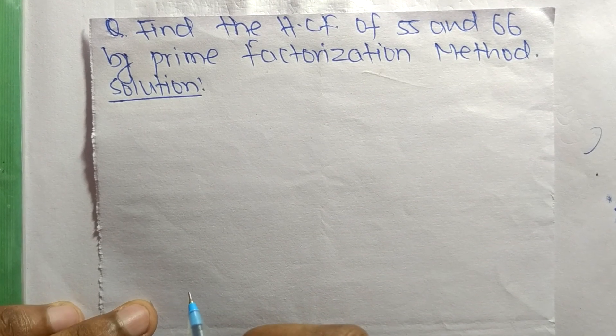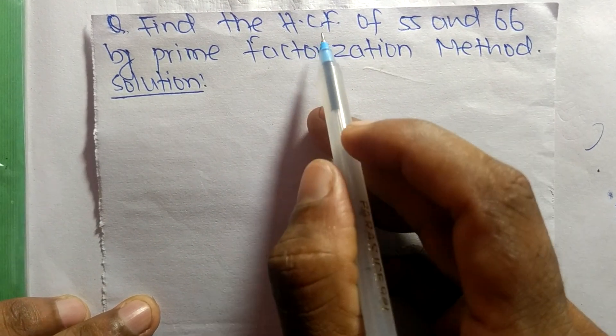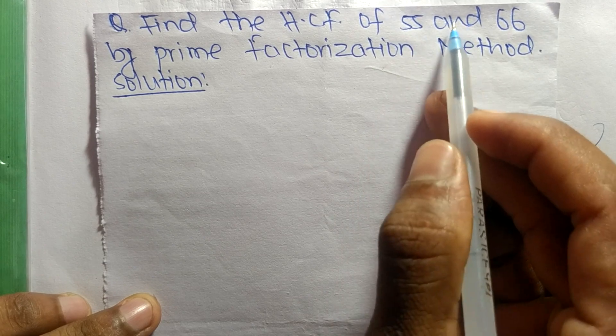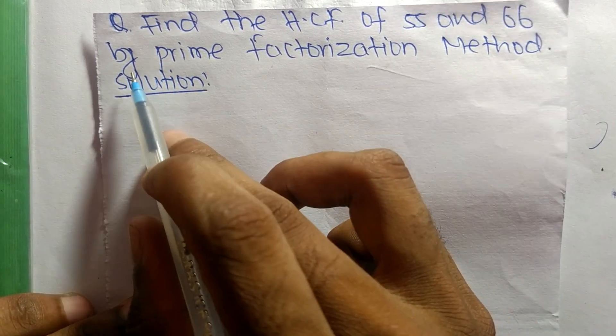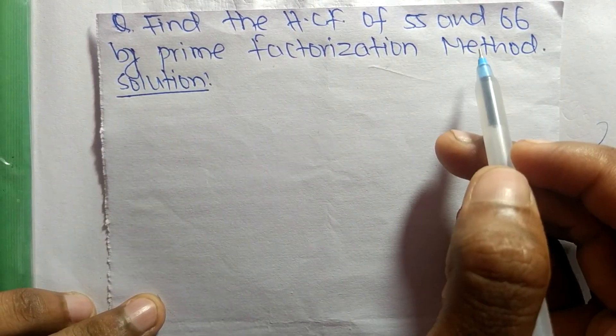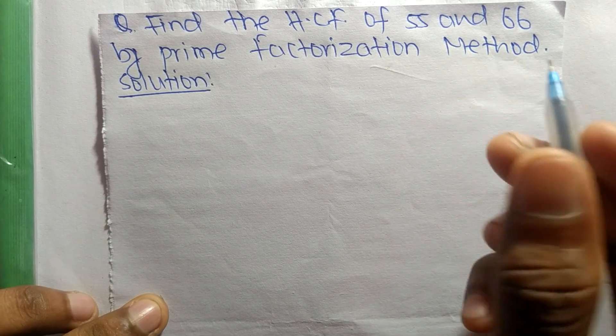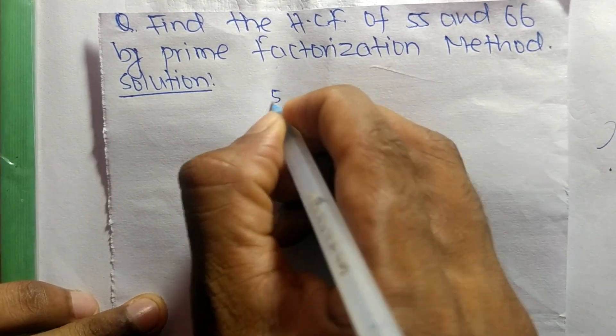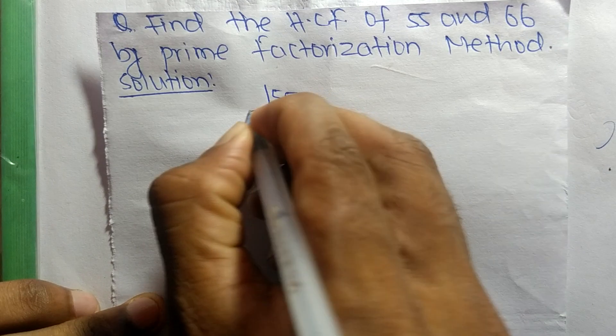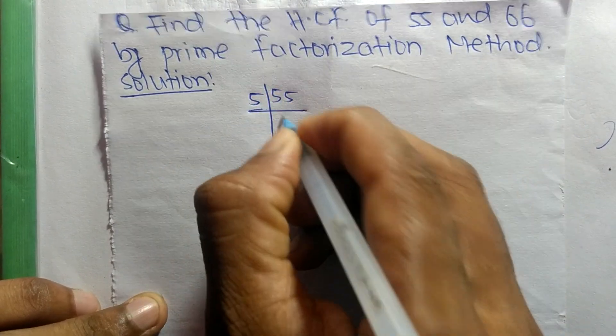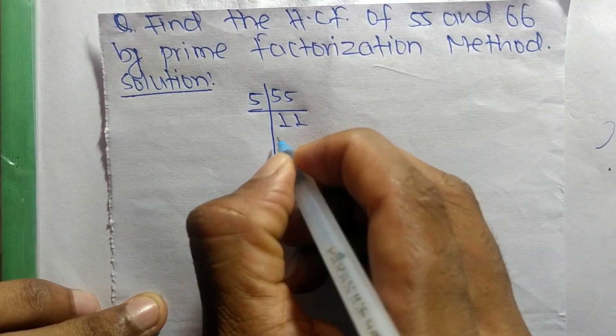Today in this video we shall learn to find the HCF of 55 and 66 by prime factorization method. So first, we find out the prime factors of 55. It is 5 times 11 equals 55, and 11 times 1 equals 11.